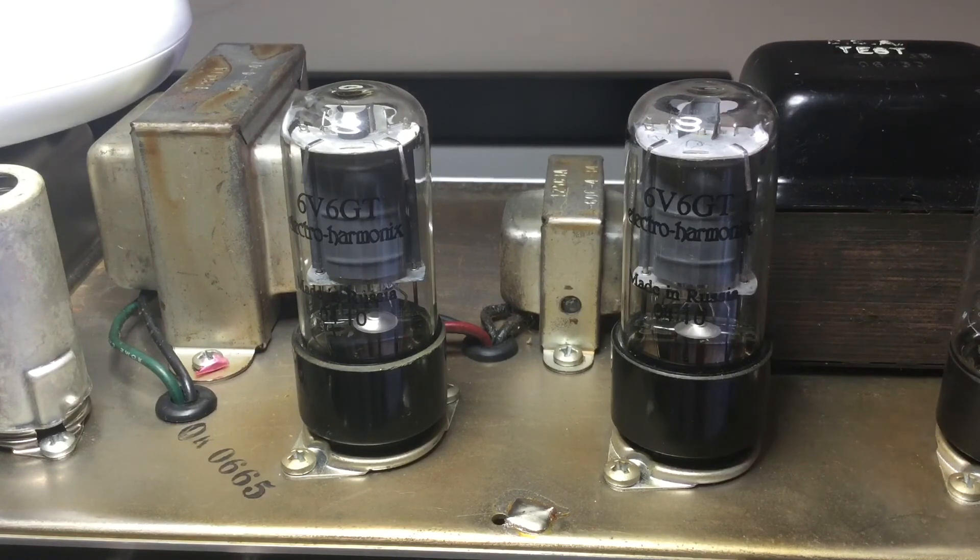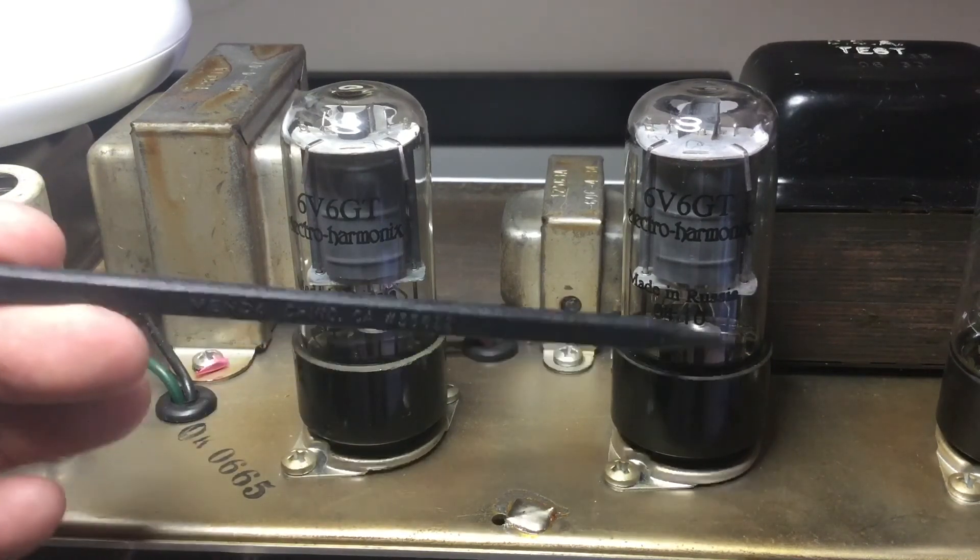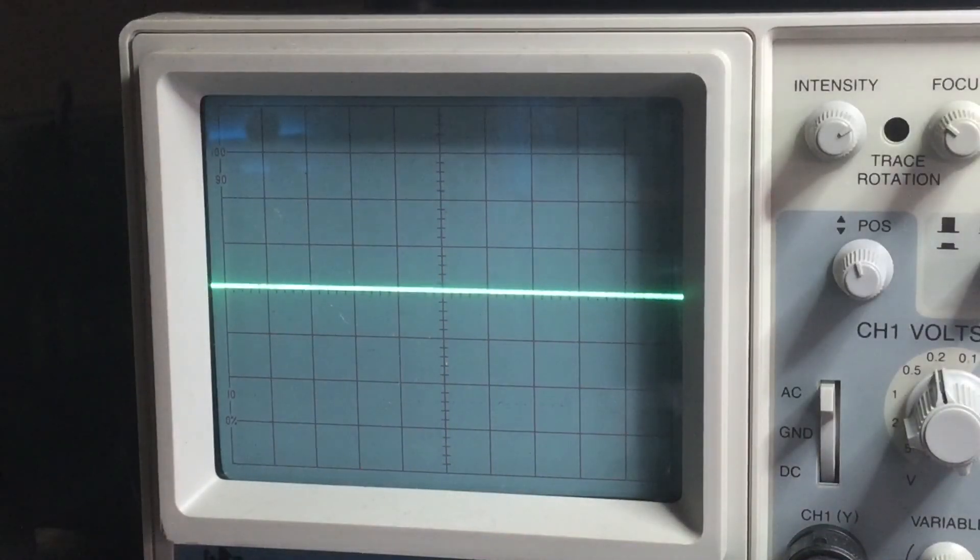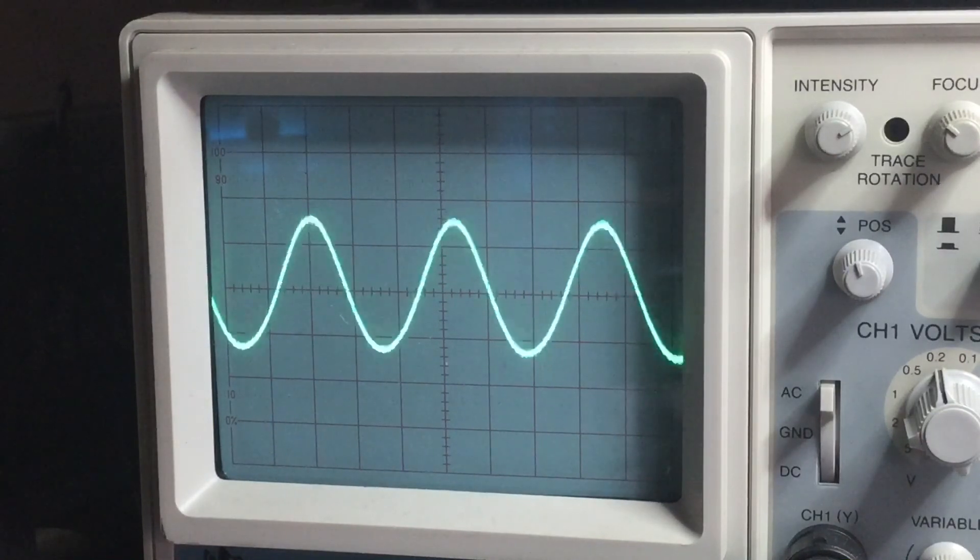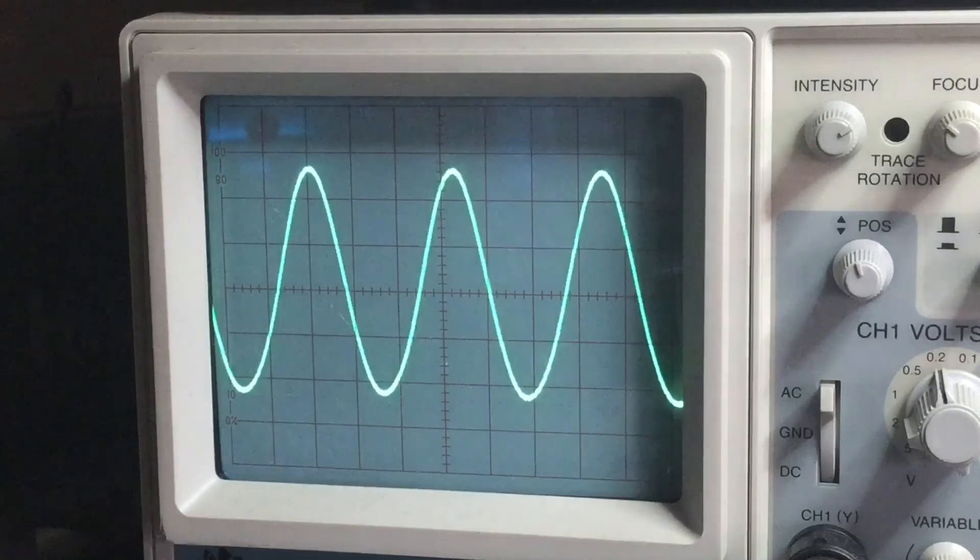I don't like Electro Harmonix tubes that much but I like these. These for some reason sound really great. I don't know if I just got a good batch or they're all pretty consistent but I do like these 6V6s. We're going to bring up the volume and we can see a nice clean sine wave so this shows that the filter capacitors are fine.